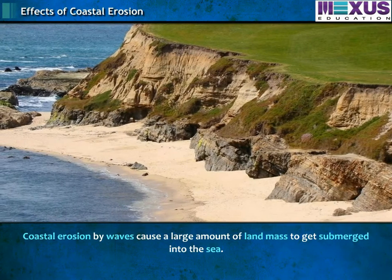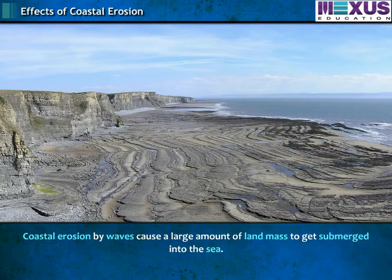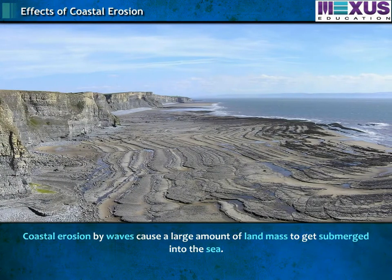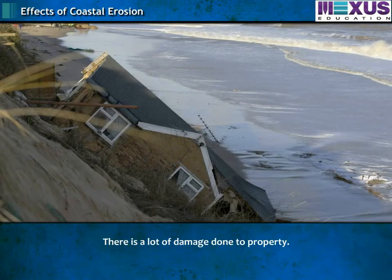Coastal erosion by waves causes a large amount of land mass to get submerged into the sea. There is a lot of damage done to property.